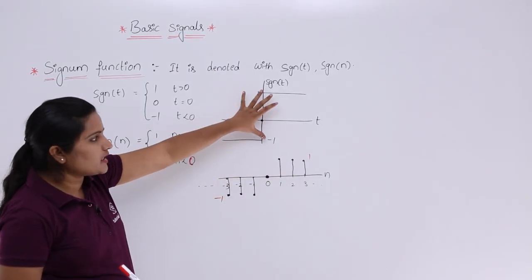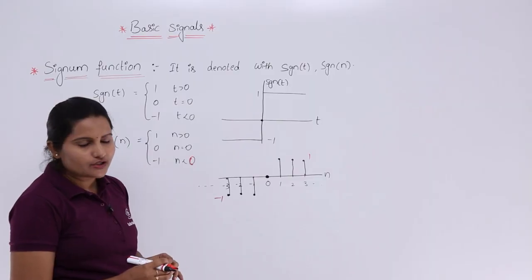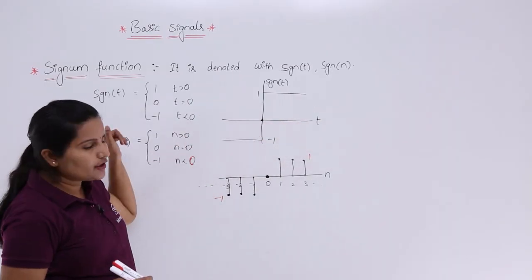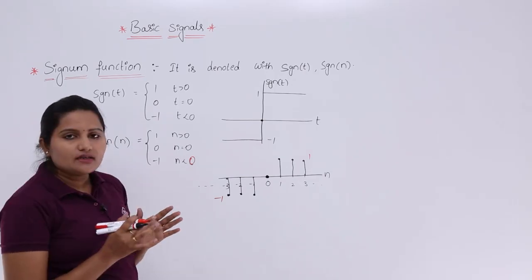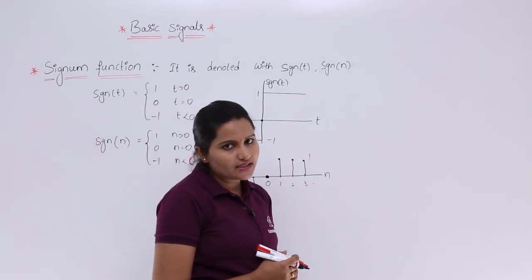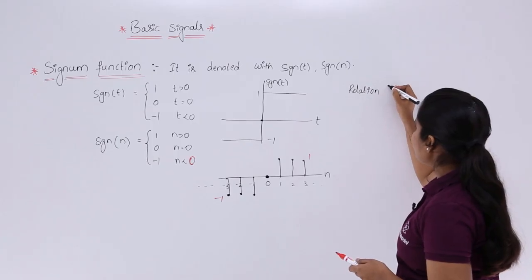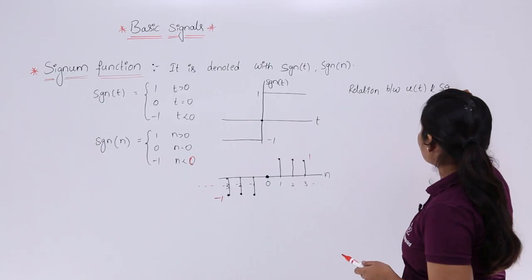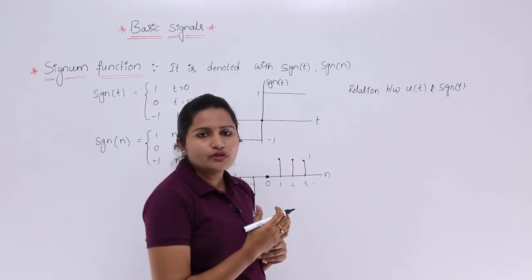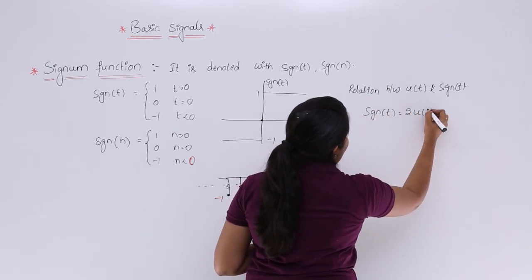This is the discrete signum function and this is the continuous signum function, but the definition is the same for both: when t equal to 0 the signum function value is 0, in the positive axis it is plus 1, and in the negative axis it is minus 1. Now a very important relation: the relation between the unit step function and the signum function is sgn(t) = 2u(t) - 1.